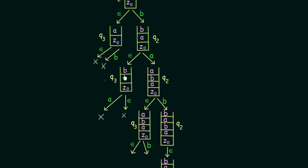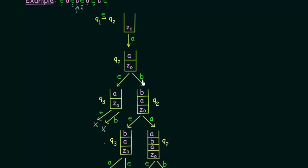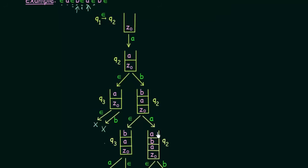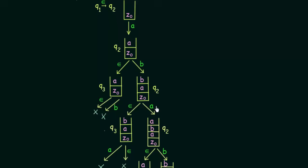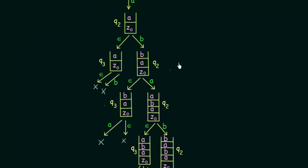Since that path has failed, the only path left is the one where after reading 'a' and 'b', instead of reading epsilon we read 'a'. We are in state q2 and in q2 if you get 'a' you just push 'a' to the stack and remain in state q2. So 'a' is pushed on top of the stack and we still stay in state q2.